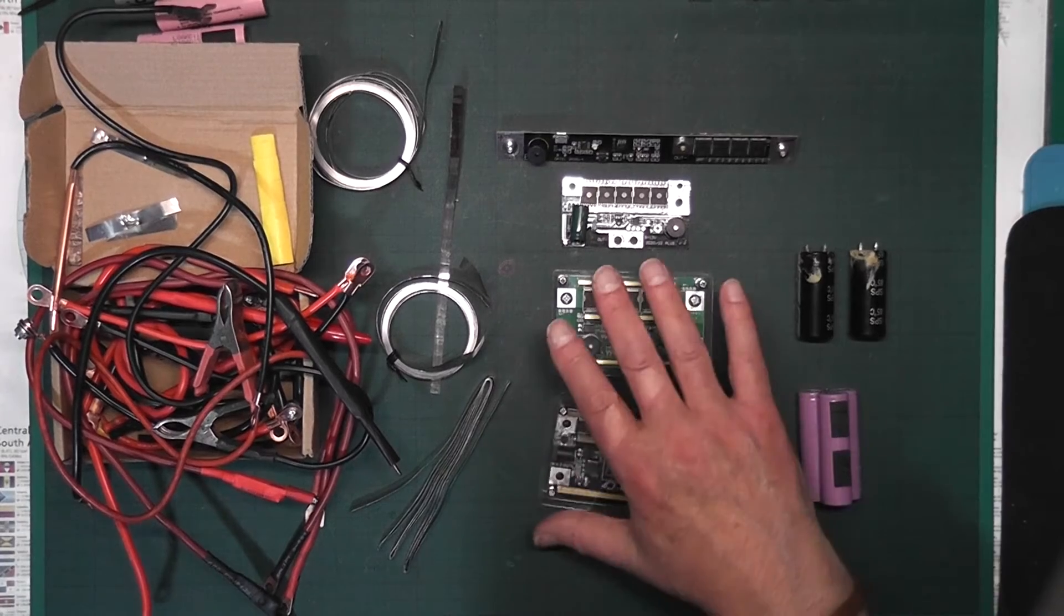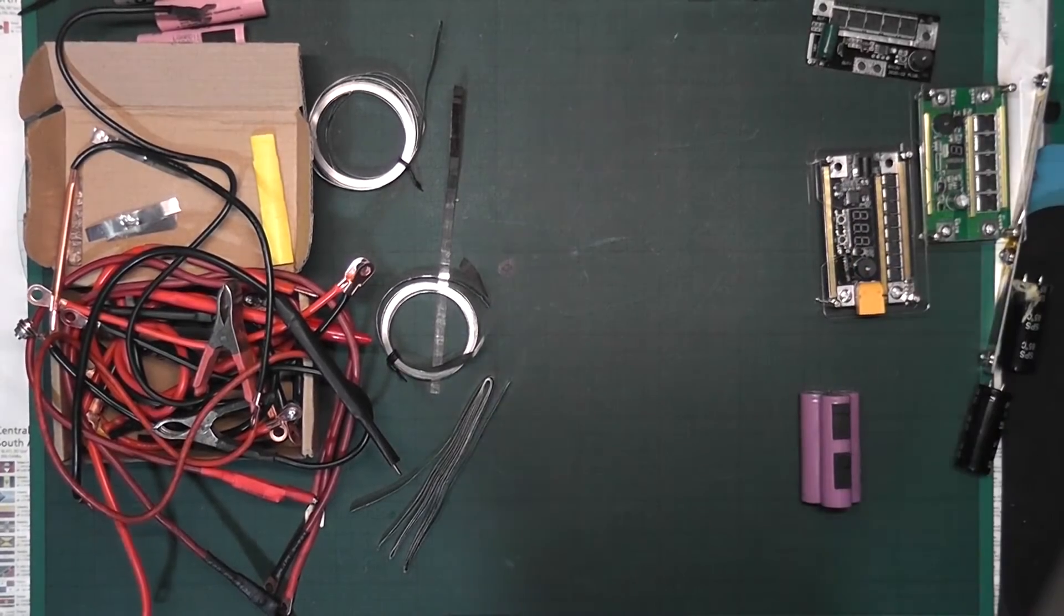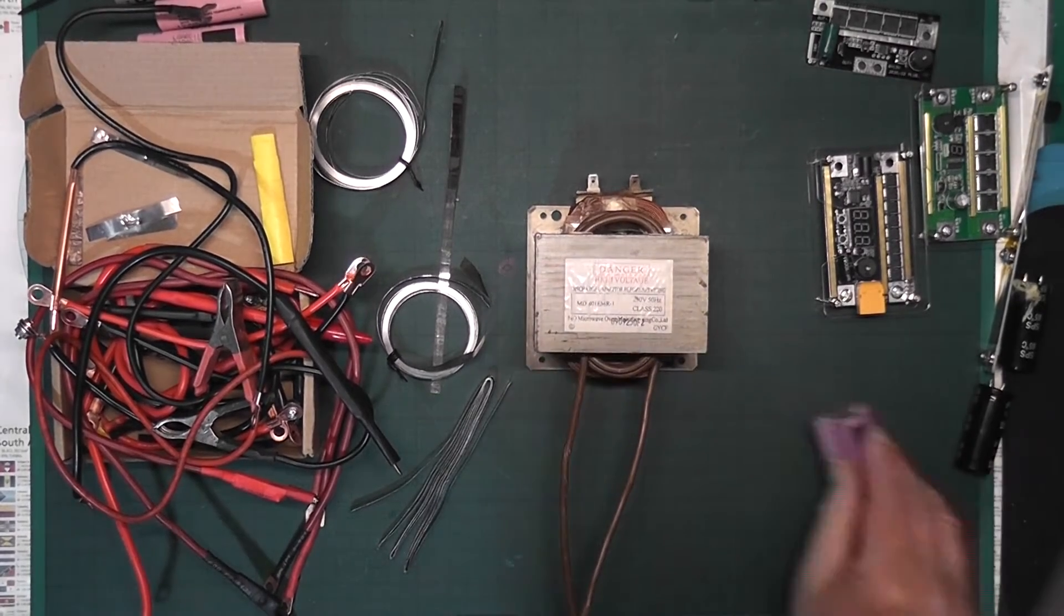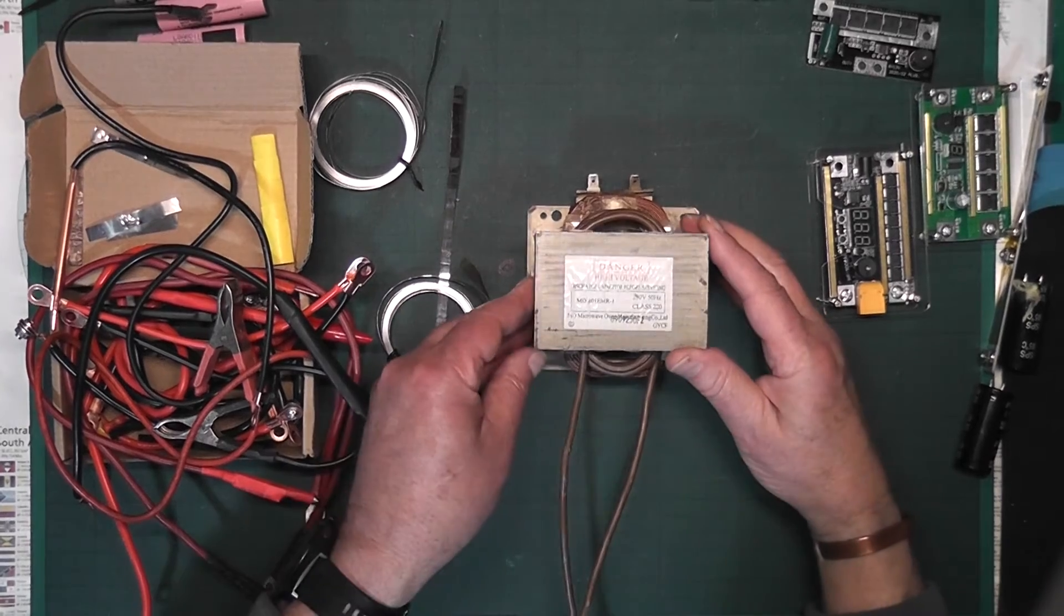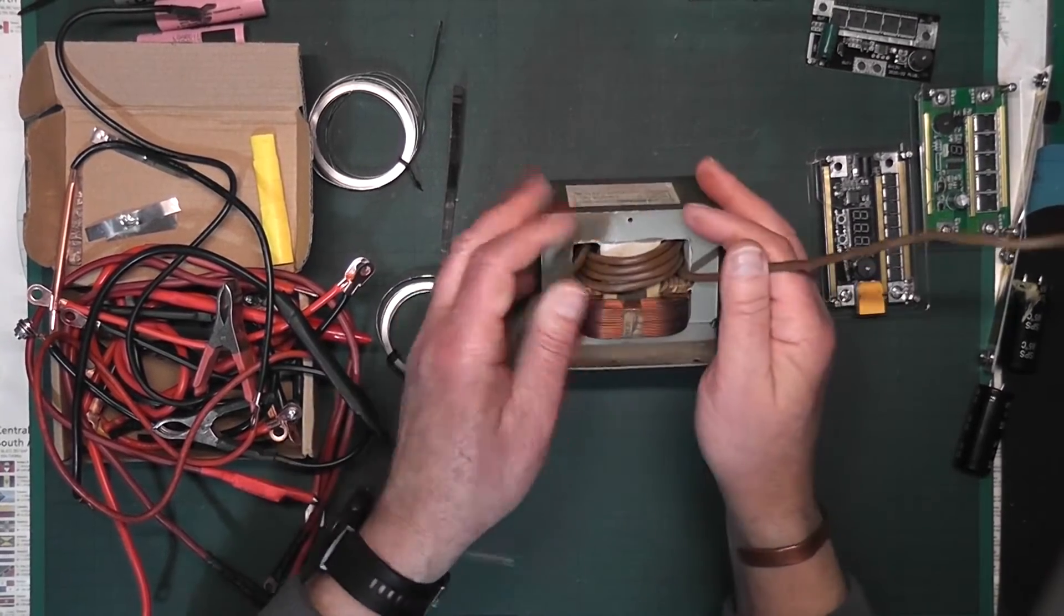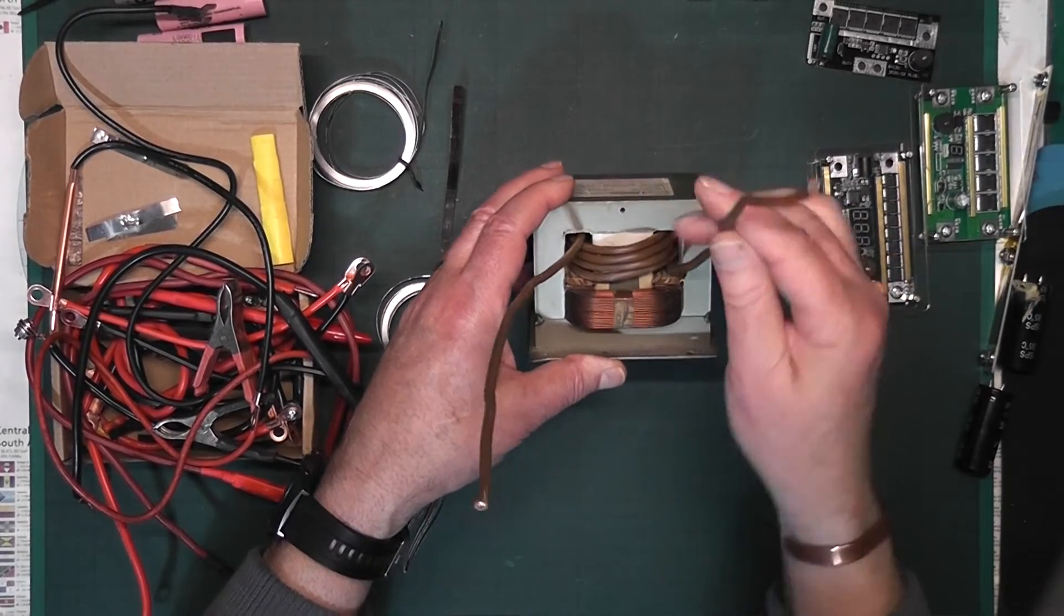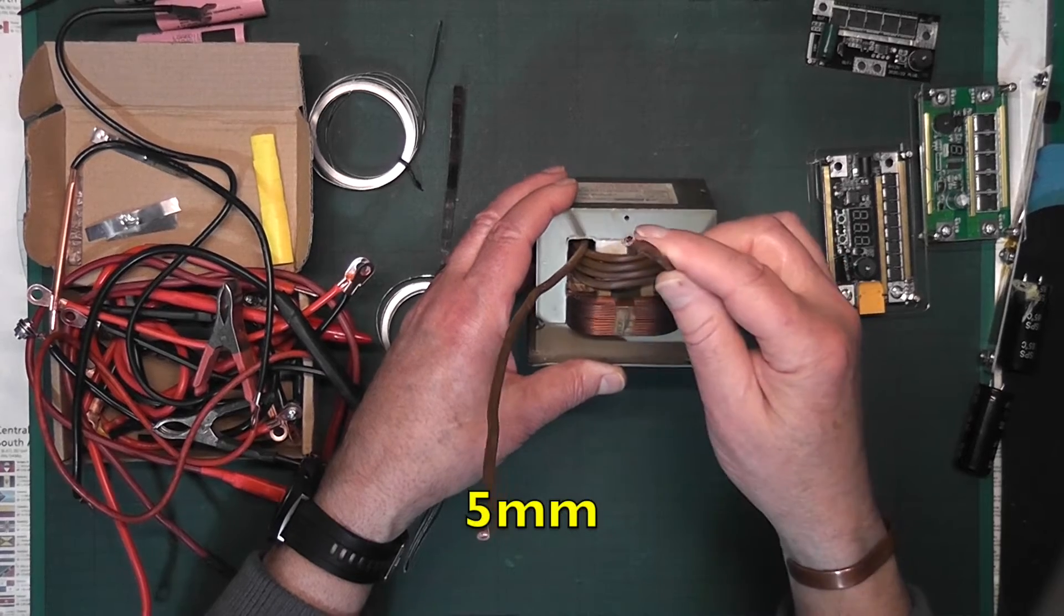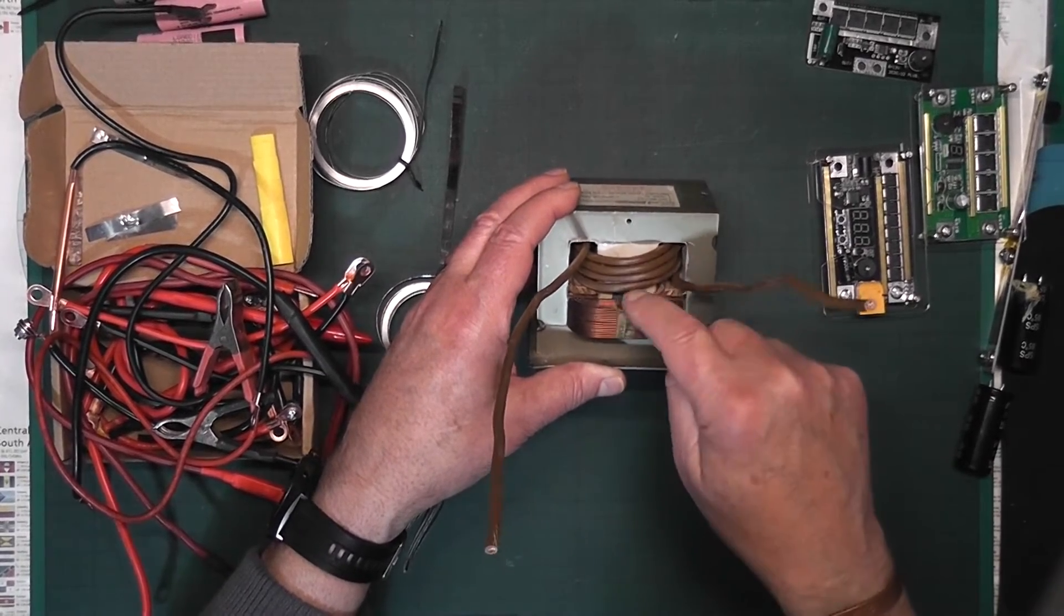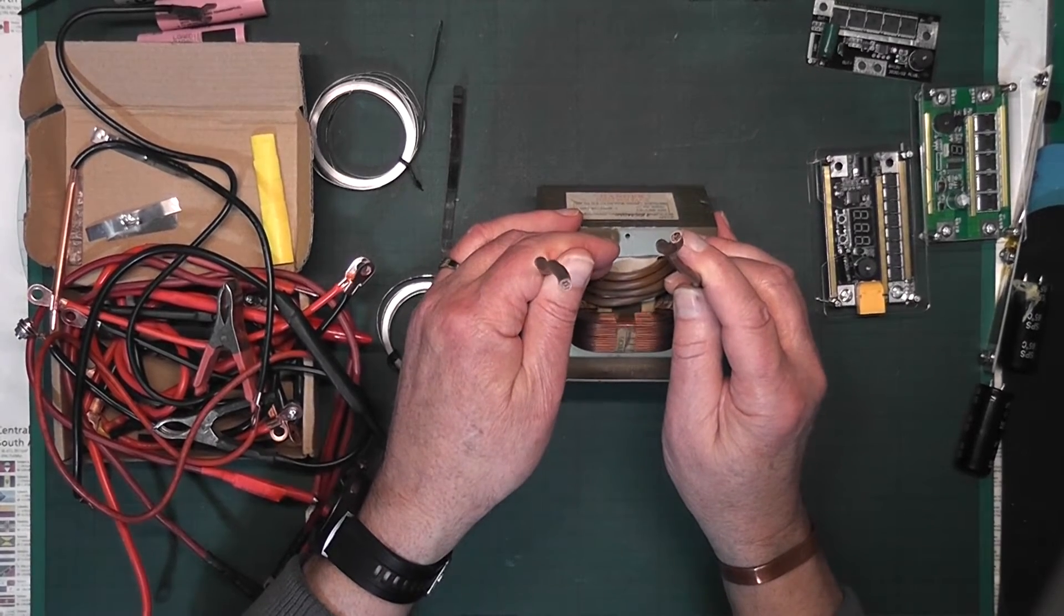Just push these to one side and we've got the good old microwave transformer. Now I've already cut out the top winding, cleared it out, and using a 10 square cable I've put it in four times, wound it around four times, and I just need to join it up now.